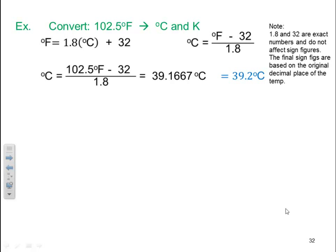Note that in this calculation, 1.8 and 32 are exact numbers and do not affect significant figures. So my final sig figs are based on my original number. Since my original number was in the tens place, I'm just switching temperature scales. Therefore, my final answer has to also be in the tens place. And that's why my final answer ended up being 39.2 degrees C.